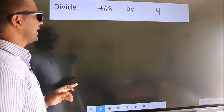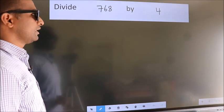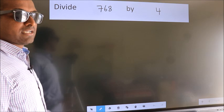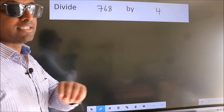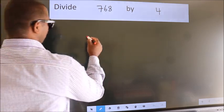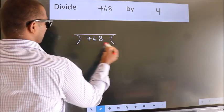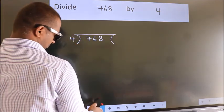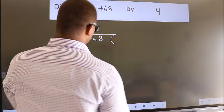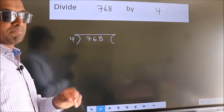Divide 768 by 4. To do this division, we should frame it in this way. 768 here, 4 here. This is your step 1.